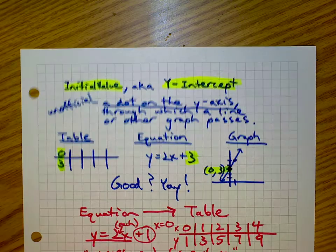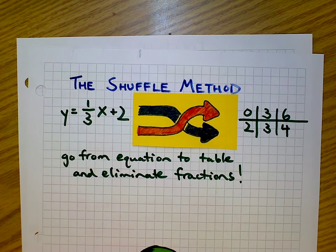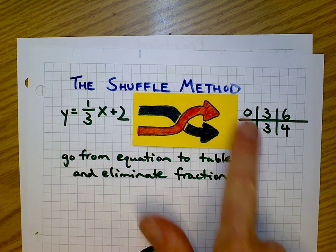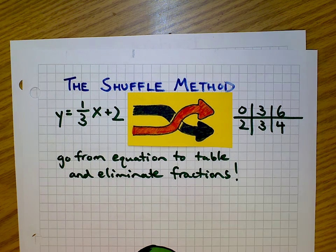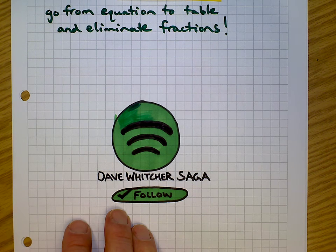What we learned here was the shuffle method — how to take fractions that are in an equation and convert them into a table that has no fractions. It's like magic. Thank you so much, follow me on Spotify, they are good songs. Talk to you later!